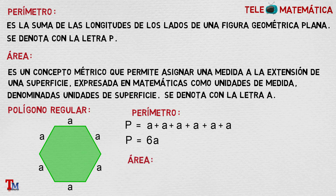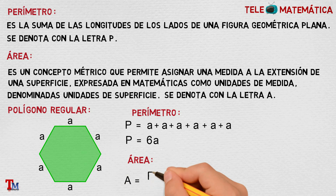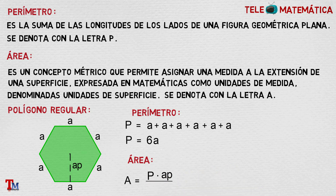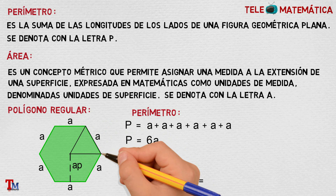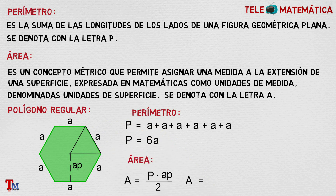Definamos ahora el área, que tiene dos formas de calcularse. Primera forma: A es igual al valor del perímetro multiplicado por la apotema, que se identifica como A sub P, sobre dos. Segunda forma: el área a partir del área de uno de los triángulos que se forman, donde tenemos dos radios más la longitud del lado. Ese sería uno de los triángulos que se forman en el polígono regular. Por lo tanto, se define como el área de ese triángulo multiplicado por la cantidad de triángulos que se forman dentro del polígono — en este caso, seis.